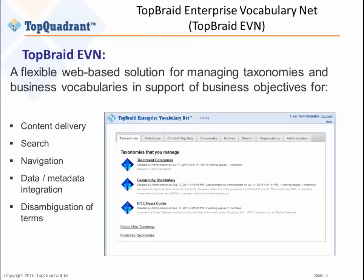EVN is a web-based solution. It installs on a central server and people log in from the web to track both taxonomies and ontologies. We use the term vocabularies broadly to refer to taxonomies, ontologies, and thesauruses. People curate this data and the metadata about terms in these vocabularies to aid in search across content, to improve searches, and to integrate data from multiple sources.